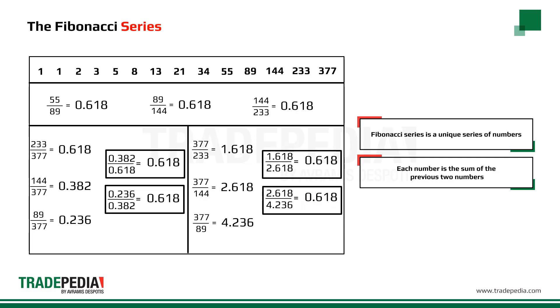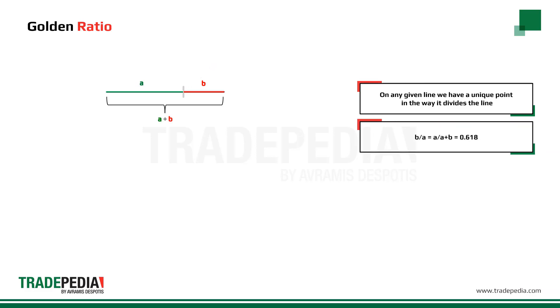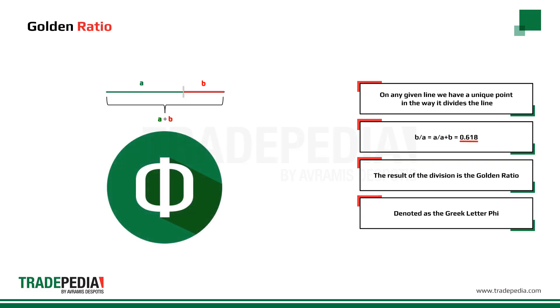So what is this magic number that keeps appearing throughout this series of numbers? This is a number that Pythagoras spoke about long before Fibonacci. Pythagoras stated that on any given line, there is a unique point — not in the middle, a bit to the right. This point is unique because if you divide b by a, you will get the same number as when you divide a by a plus b. That number is 0.618 — the golden ratio, denoted as the Greek letter phi.